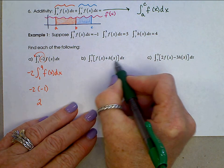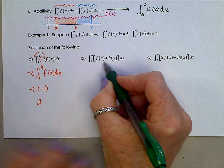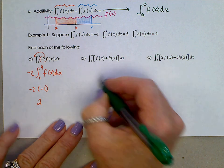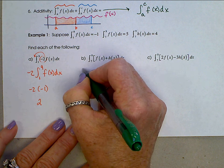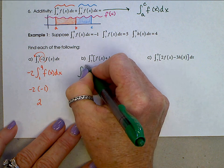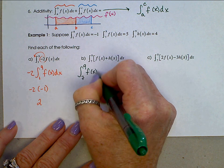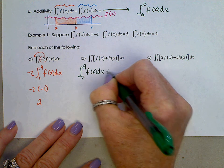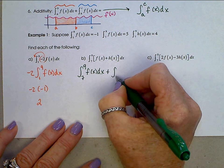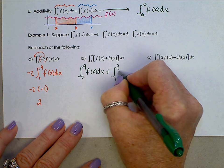This next one, the integral from 7 to 9 of the sum of f and h, splitting that up over the addition sign, we have the integral from 7 to 9 of f(x) dx plus the integral from 7 to 9 of h(x) dx.